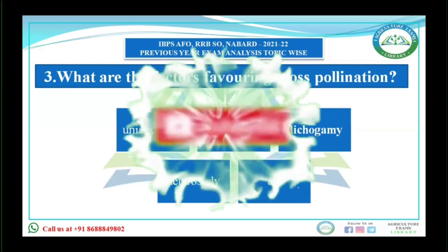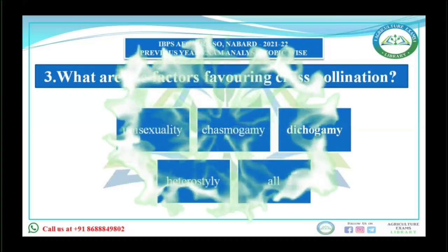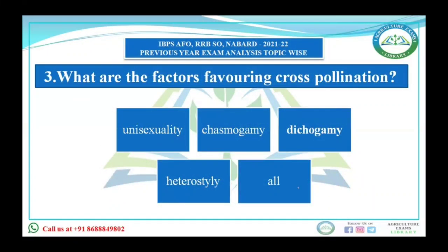For cross-pollination, first factor is unisexuality — when only one sex is present, it may possess only stamens or only pistils (carpels). Unisexuality may be seen in date palm, grape, and others. Another condition is chasmogamy — in chasmogamous flowers, the flowers are open and the reproductive organs are exposed to the external environment, where cross-pollination is common and bees, butterflies, and moths are attracted.